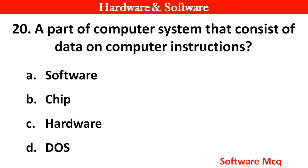Question 18: Part of a computer system that consists of data and computer instructions. Options: A. Software, B. Chips, C. Hardware, D. DOS. Right answer is option A — Software.